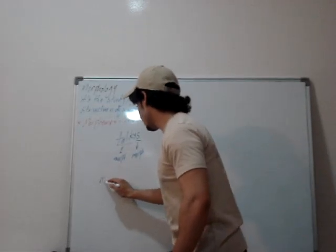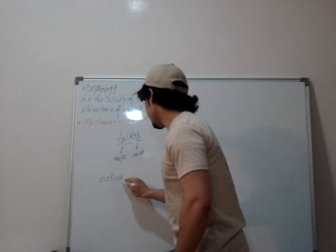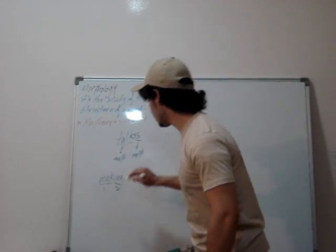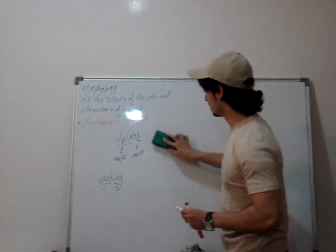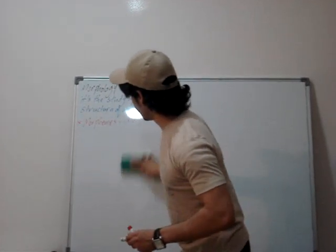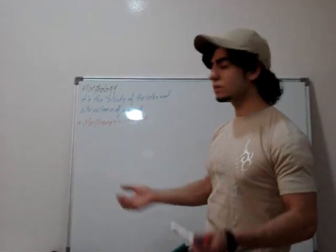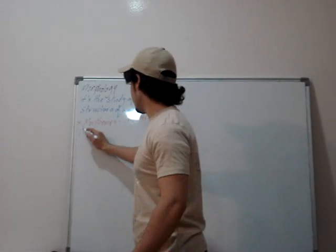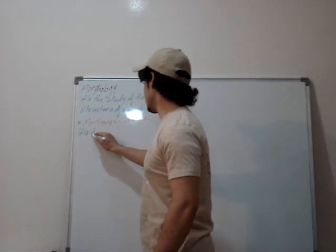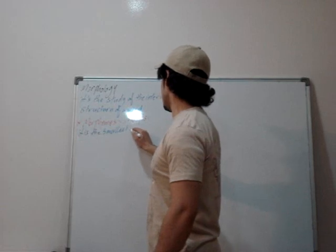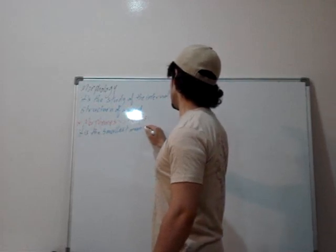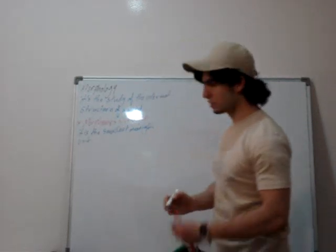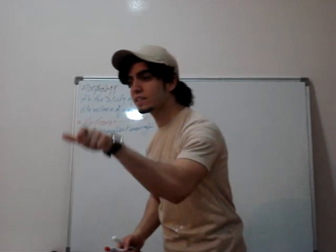Let's have another example: the word 'making'. It has two morphemes. The first one is 'make', and the second one is 'ing'. Now we define the word morpheme: a morpheme is the smallest meaningful unit. So it is a very small unit of language that has a meaning.